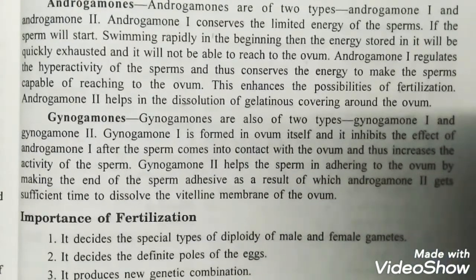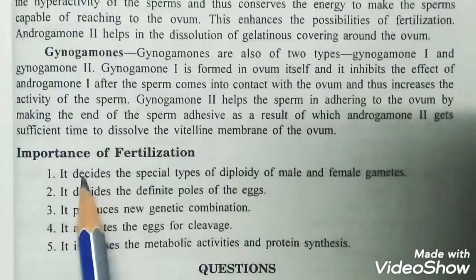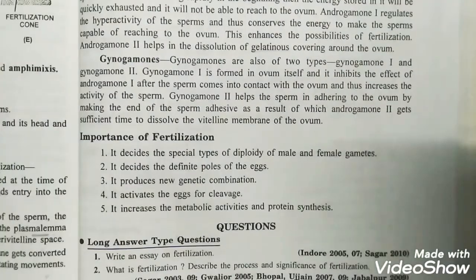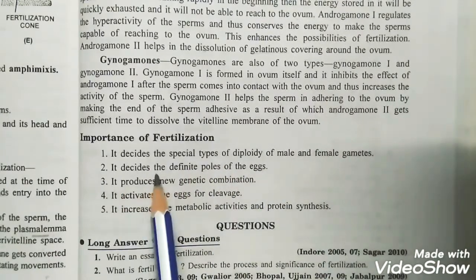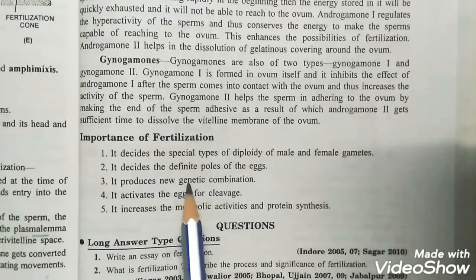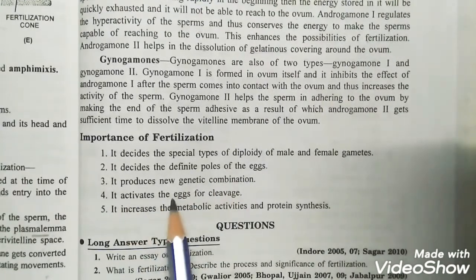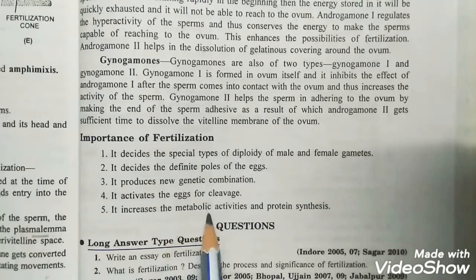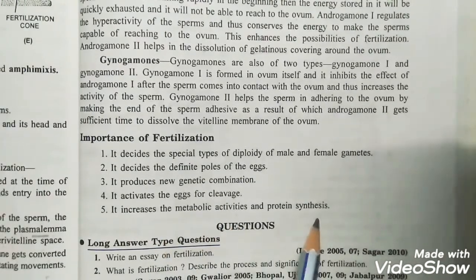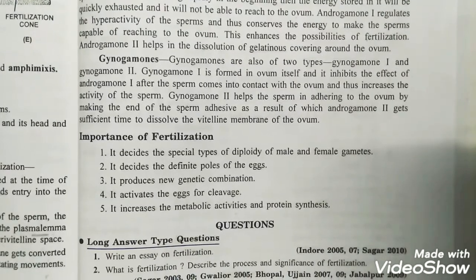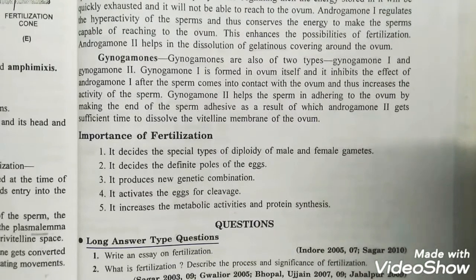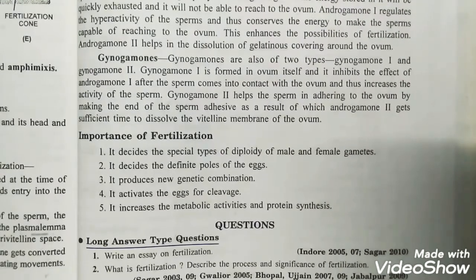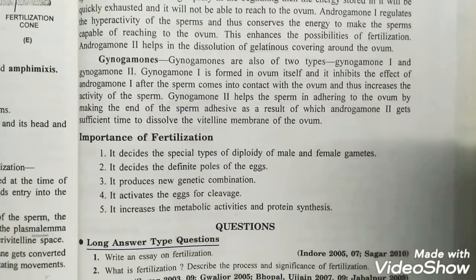Now the importance of fertilization: it decides the diploidy of male and female chromosomes, it decides the definite poles of the zygote, it produces new genetic combinations, it activates the egg for cleavage, and it increases the metabolic activities and protein synthesis. These were the five key importances of fertilization.